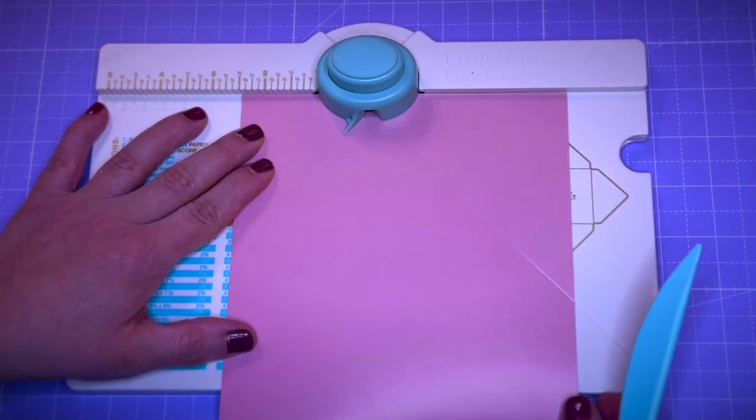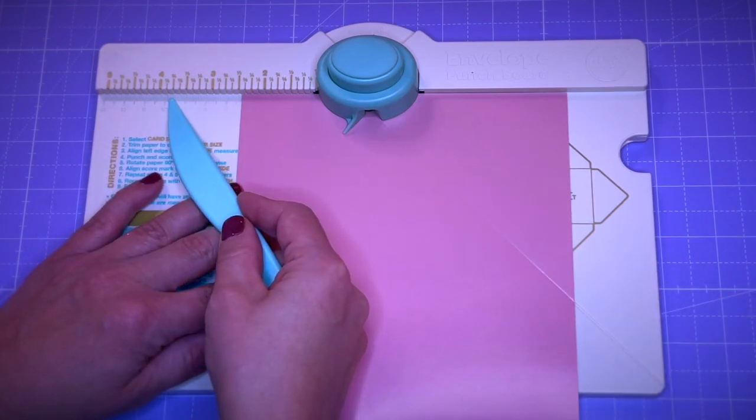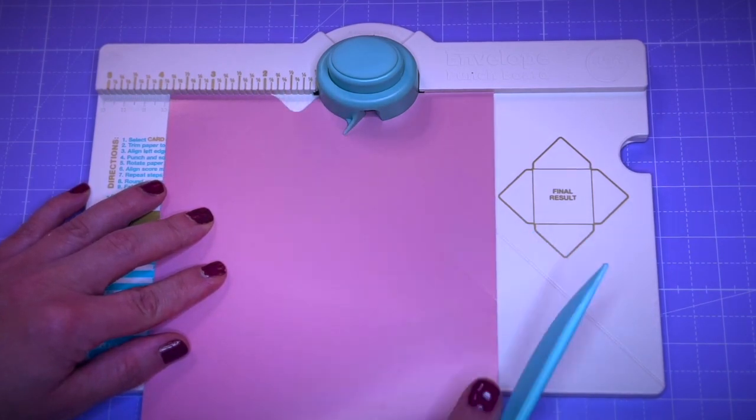This is our first punch line. We bring it over now to 9.8 centimeters and we give it another punch and the score.